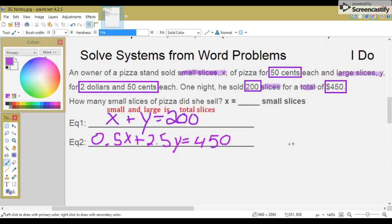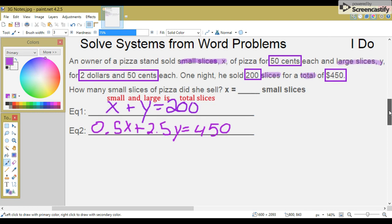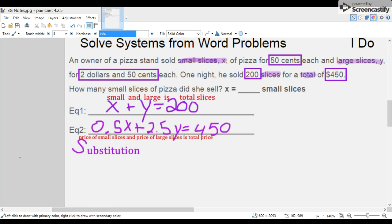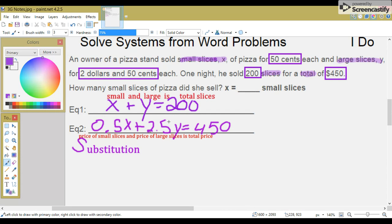Instead of going right into the calculator and finding the answer, let's take the time to practice doing it by hand. Let's use substitution. The first step we want to do here, we want to find X, the small slices. So, we're going to solve for Y to replace it to get X. 200 minus Y equals X.